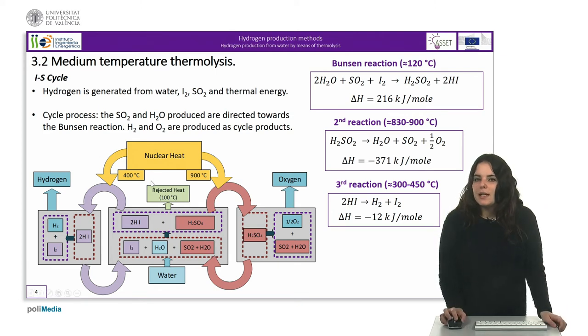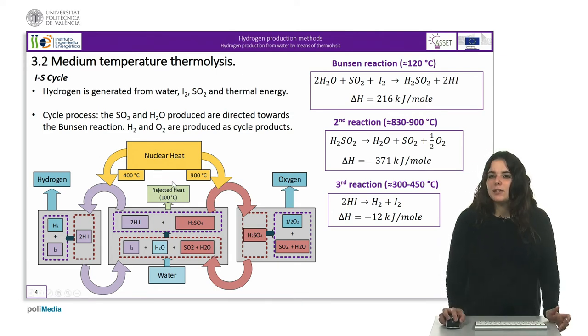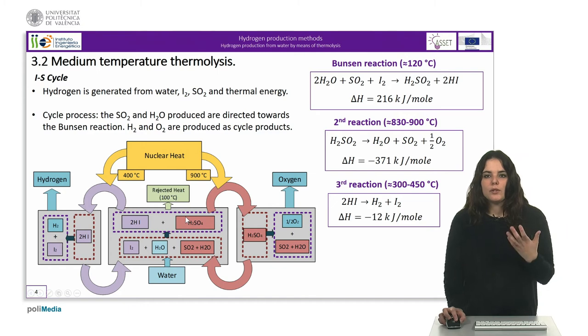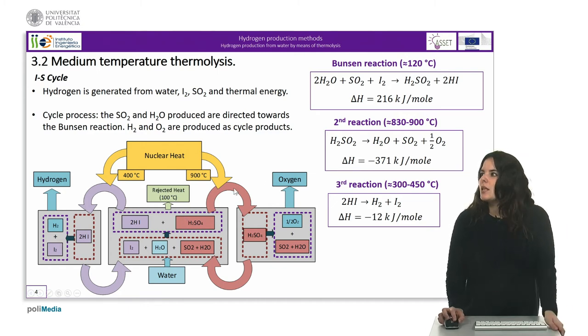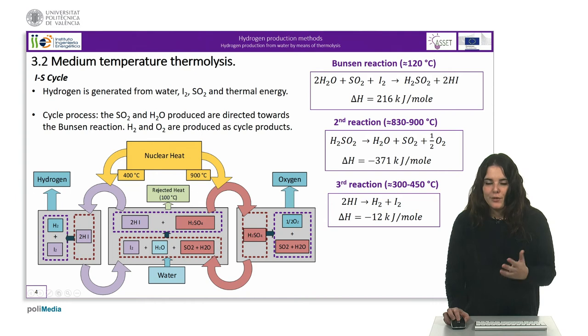In the diagram we can differentiate the different reactions taking place. The nucleus is the Bunsen reaction that occurs at about 120°C. The Bunsen reaction occurs in liquid phase spontaneously and exothermically.